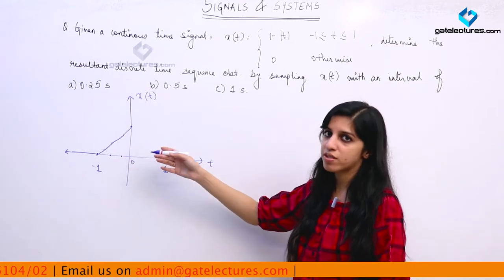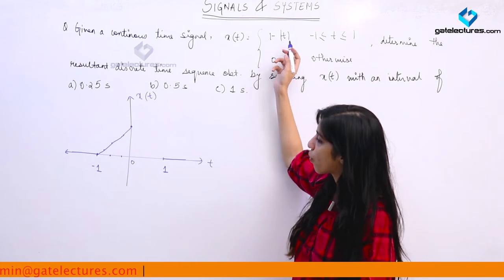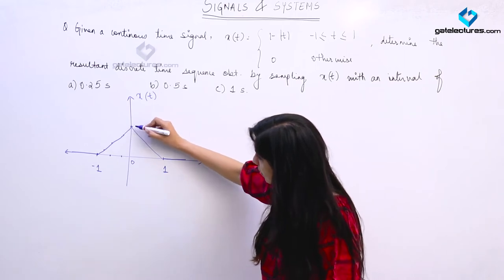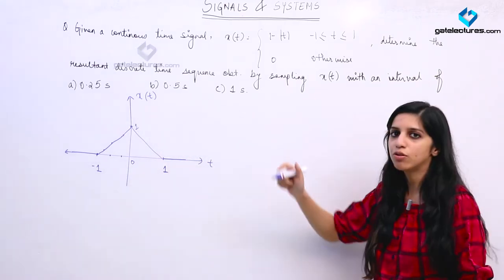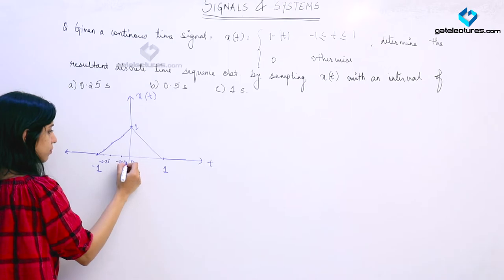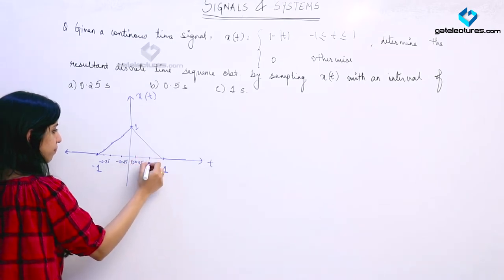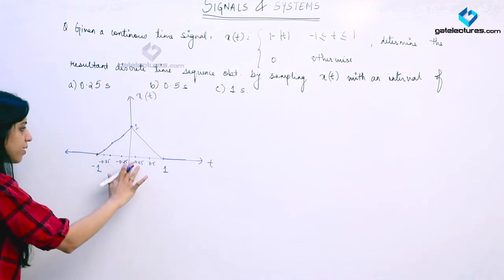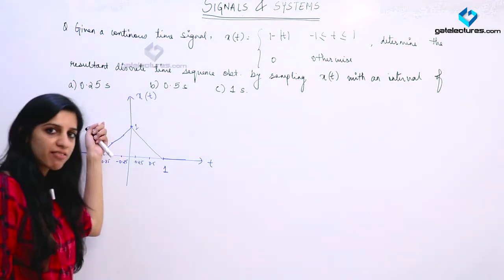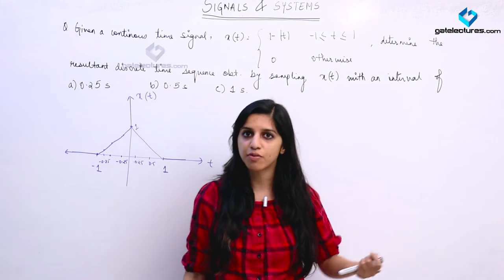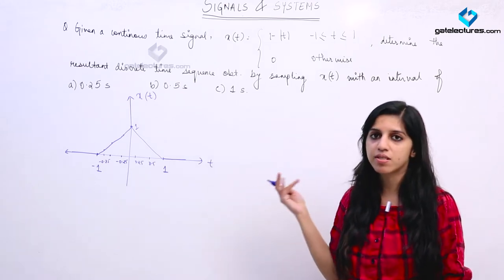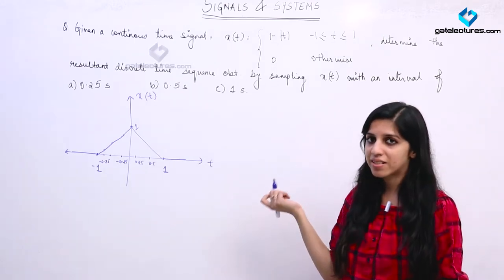Similarly, repeating for positive values of t — putting t = 0.25, 0.5, 0.75 — we obtain a symmetric triangular graph. This is how x(t) looks between minus 1 and 1. Now, to obtain a discrete time signal from a continuous time signal we need to sample it. When we sample the signal using an impulse train, we can obtain a discrete time sequence.